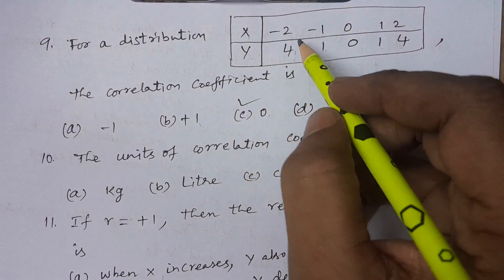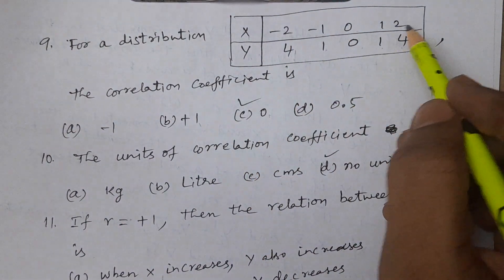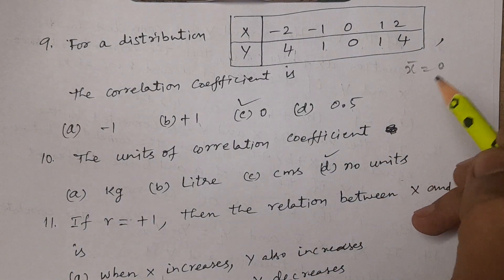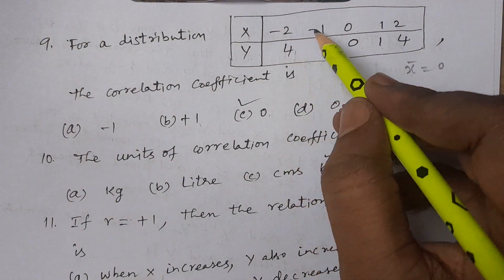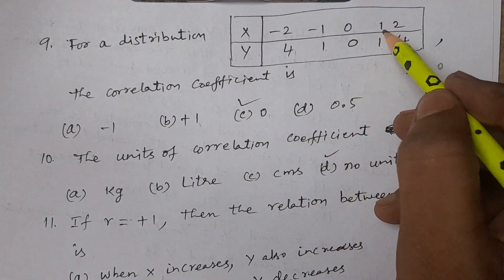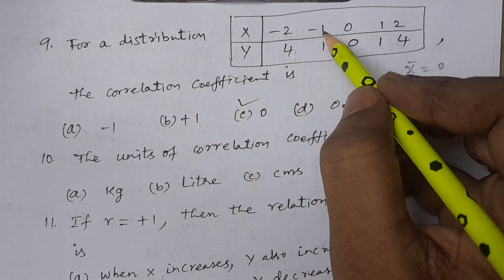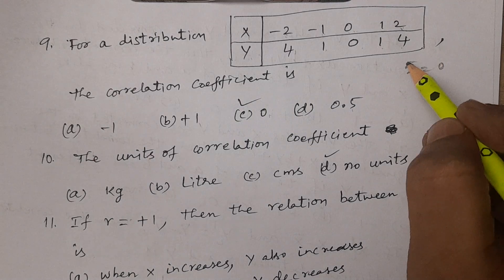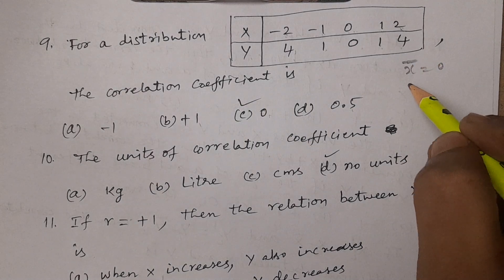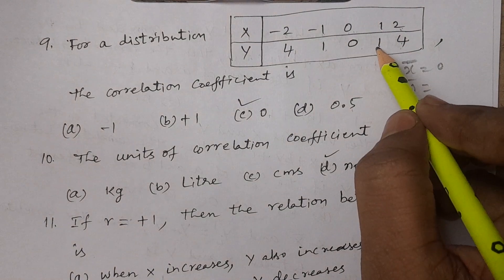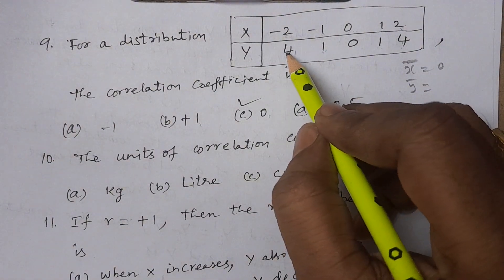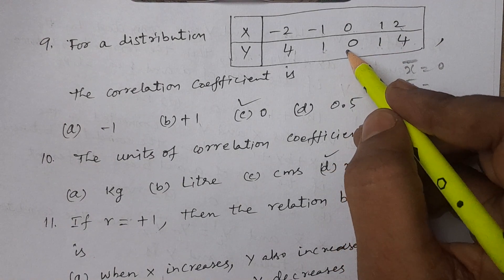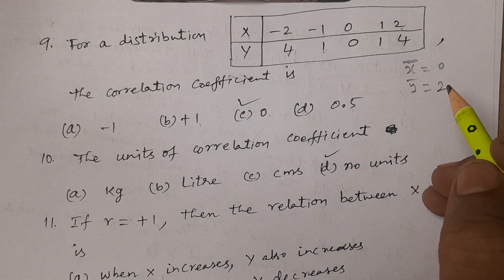Calculating x bar: summation xi is minus two minus one plus zero plus one plus two, which equals zero, so x bar is zero. For y bar: four plus one plus zero plus one plus four equals ten, divided by five gives y bar equals two.